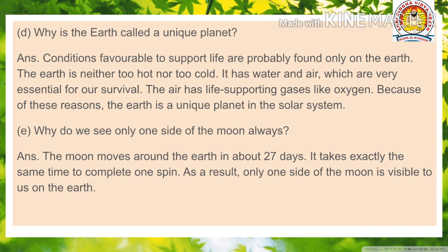Question number D: Why is the Earth called a unique planet? Conditions favorable to support life are probably found only on the Earth. The Earth is neither too hot nor too cold. It has water and air, which are very essential for our survival. The air has life-supporting gases like oxygen. Because of this reason, the Earth is a unique planet in the solar system.